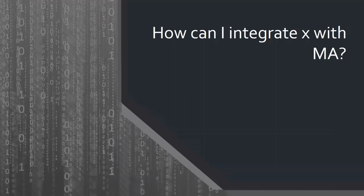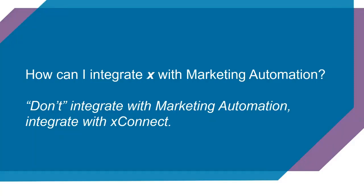A common question is: how do I integrate something with marketing automation? Marketing automation can operate on all of the data you have within XConnect, so instead of focusing on integrating with marketing automation directly, you should concentrate on integrating with XConnect. That way you can use the data not only within marketing automation, but also for personalization on the website, segmentation, or anything else.